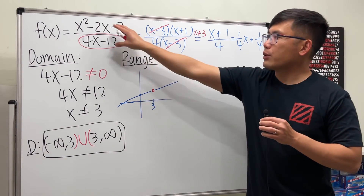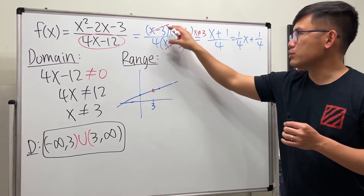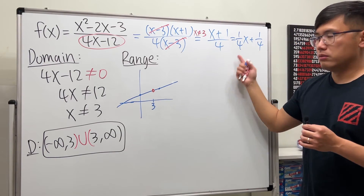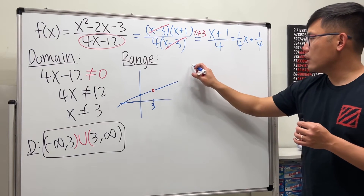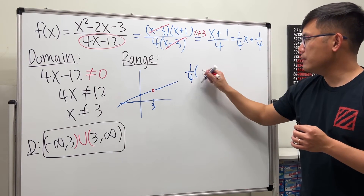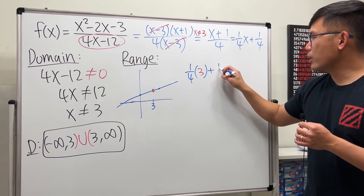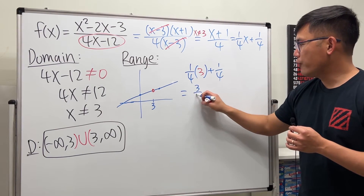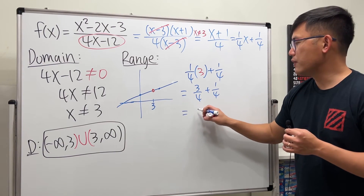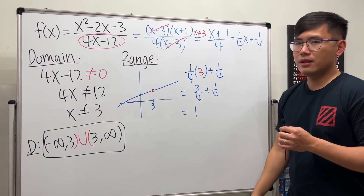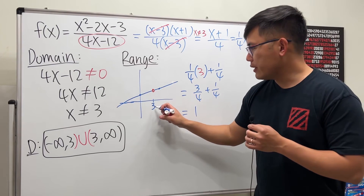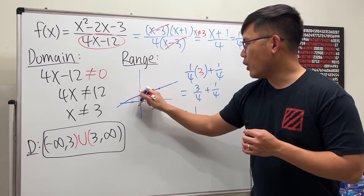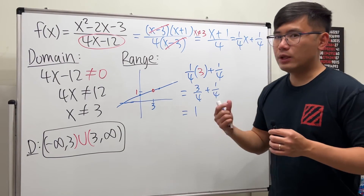We substitute x equals 3 into the simplified form — not the original, since that gives zero over zero. So we compute (1/4)(3) plus 1/4, which equals 3/4 plus 1/4, giving us 4/4, which equals 1. So when x equals 3, the y-value is 1 — that's the missing y-value.